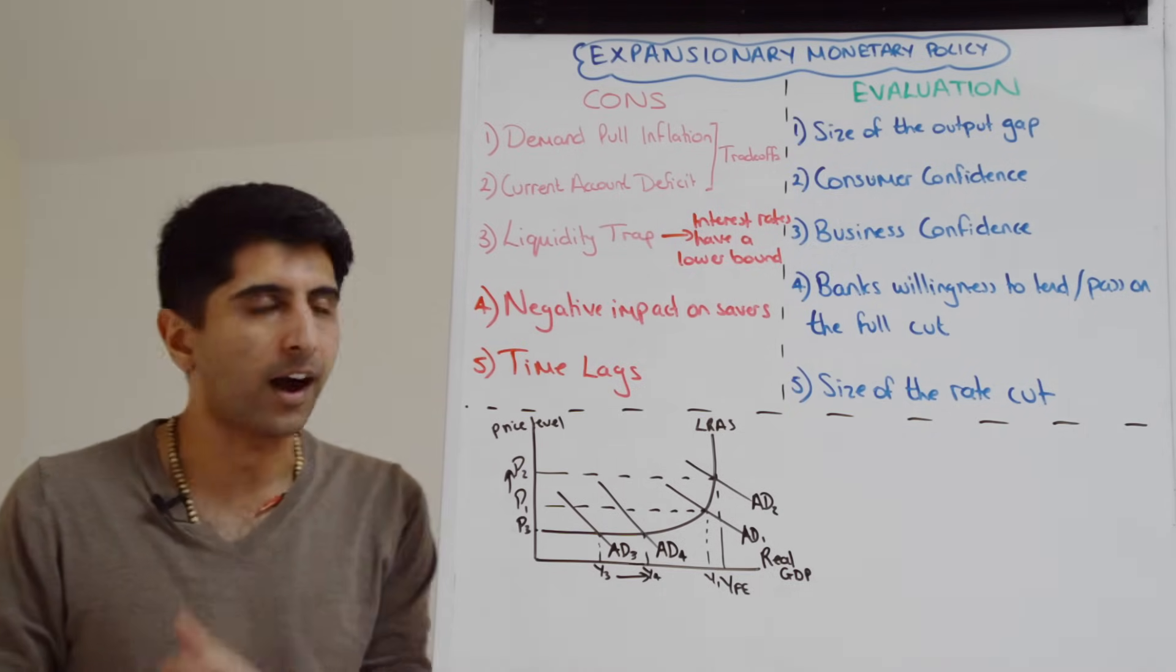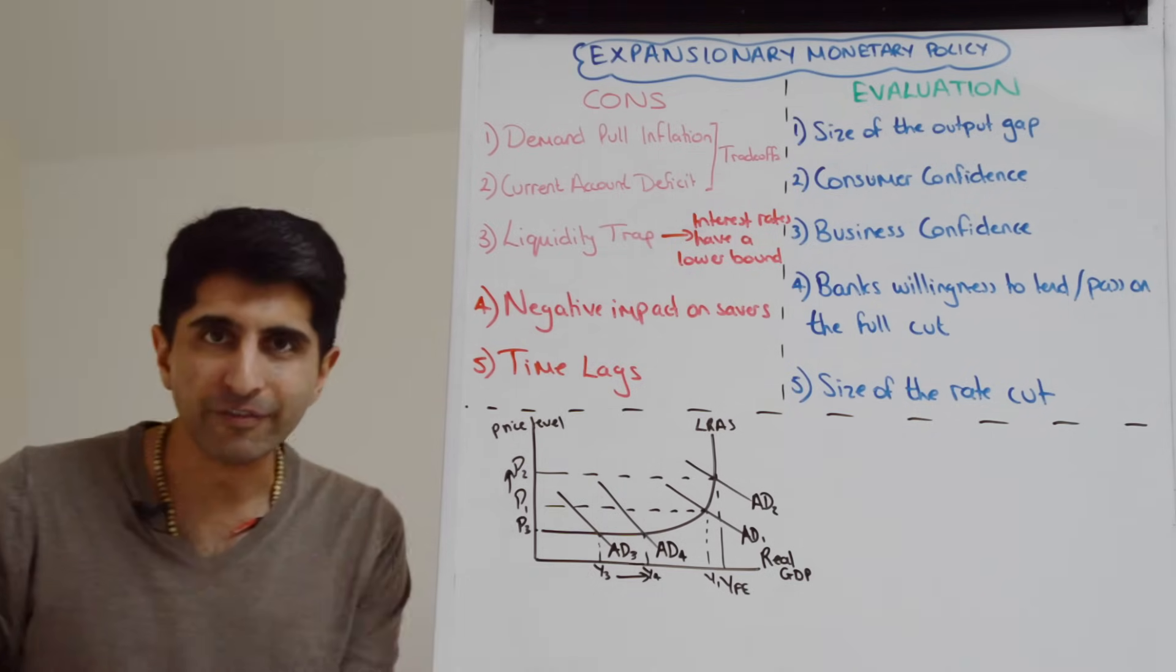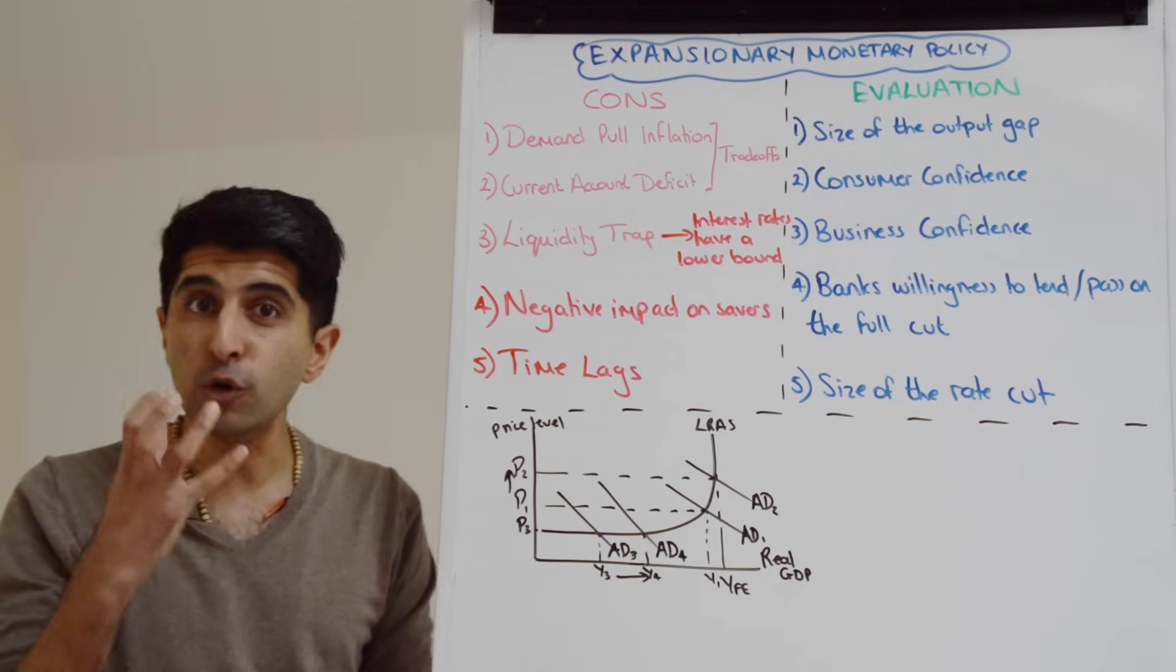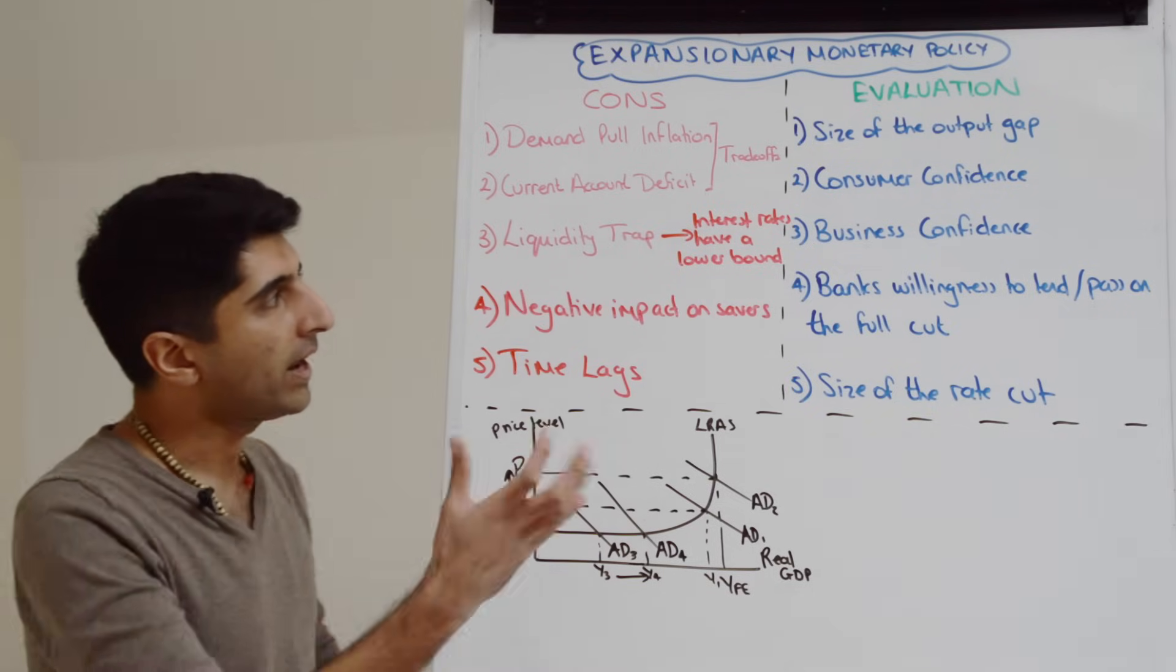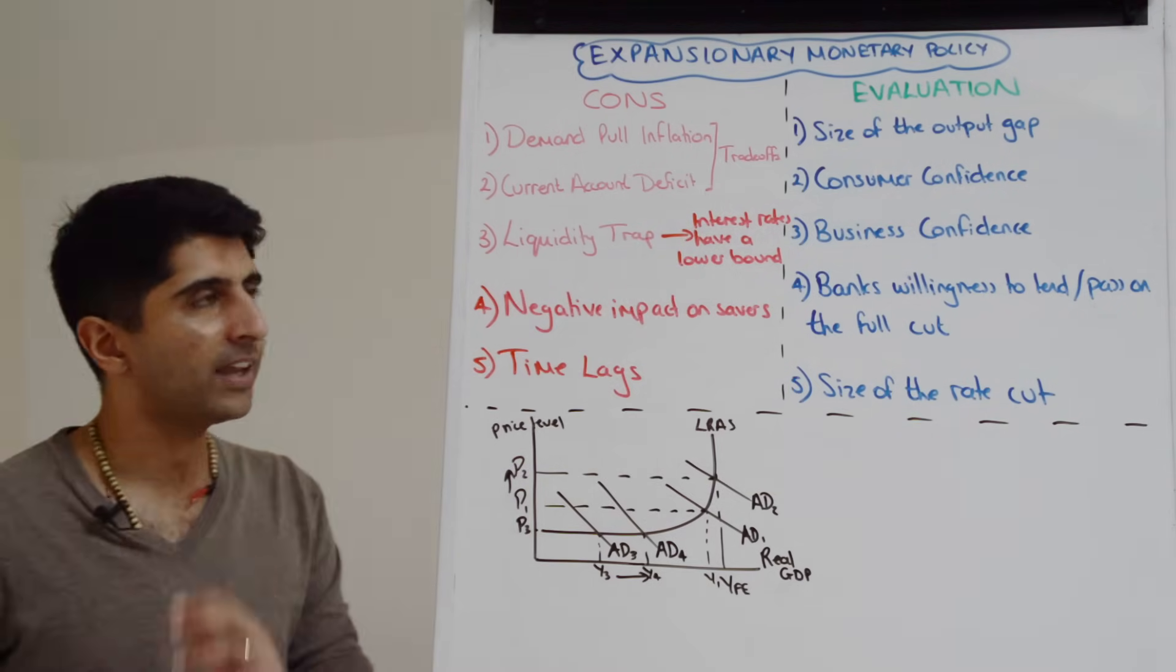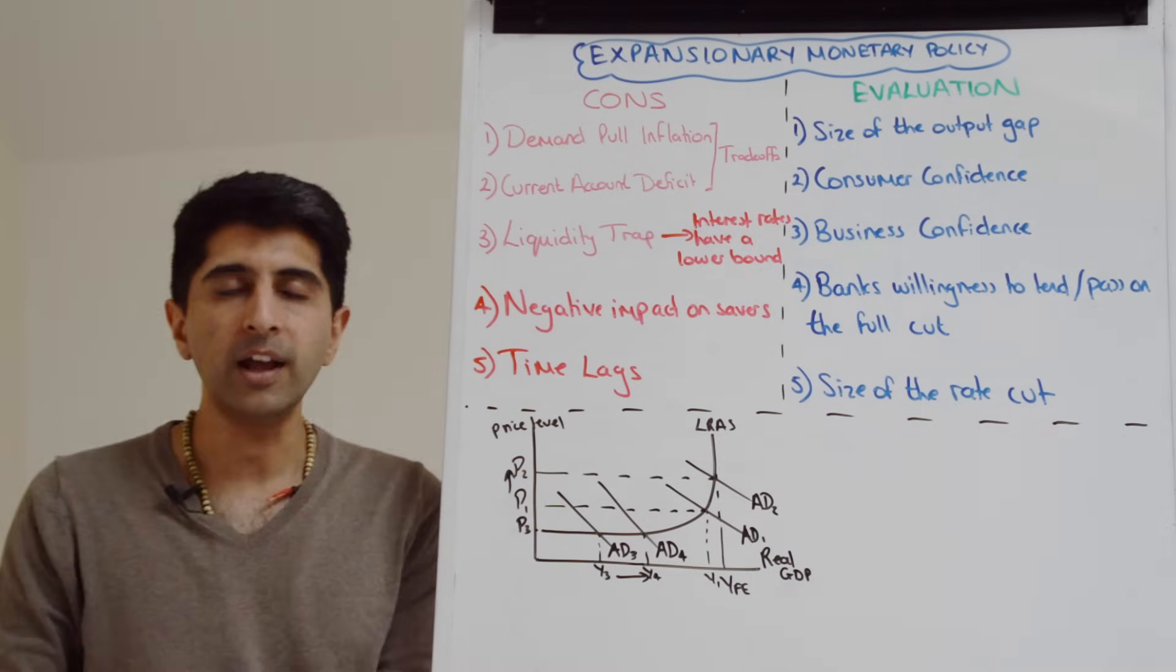Another issue is the Keynesian argument that interest rates have a lower bound, and that means interest rates after a given point will lose their effectiveness when they hit their lower bound. Very much a Keynesian idea, and that is because they say that when interest rates hit their lower bound, the economy enters a liquidity trap.